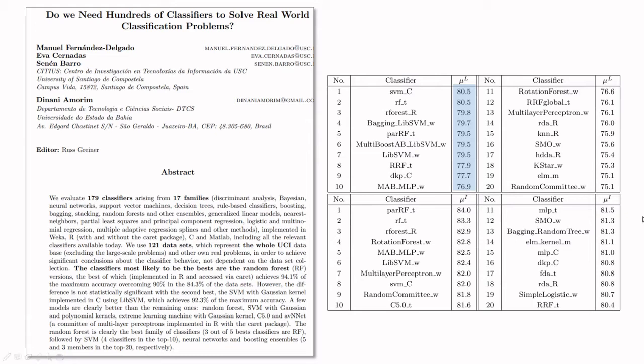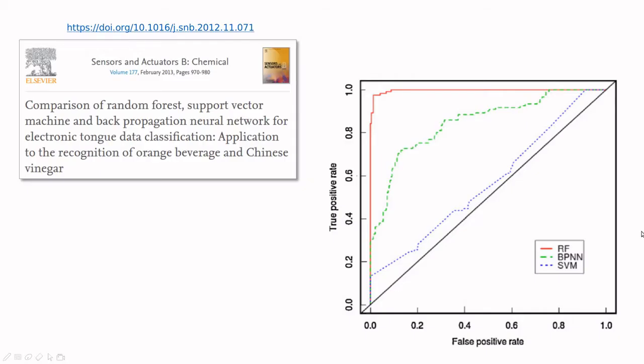So I would say that no one is better than the other, or actually it's very context-specific. In this paper, for instance, they conclude the opposite. So they say that random forest outperforms support vector machine and neural network.